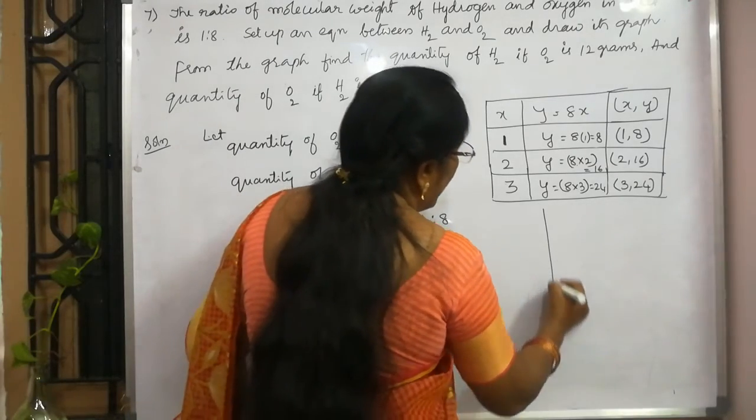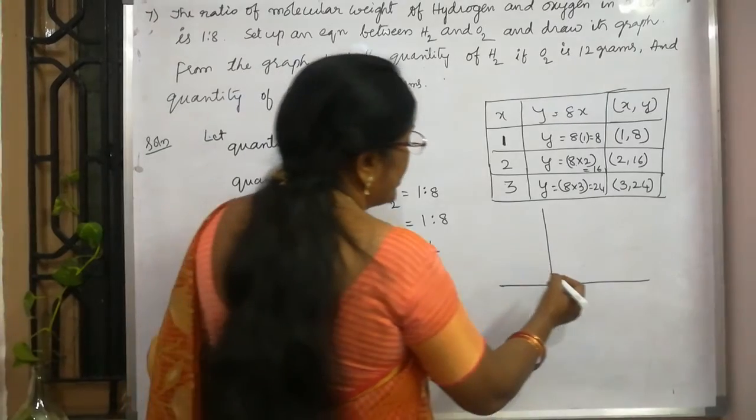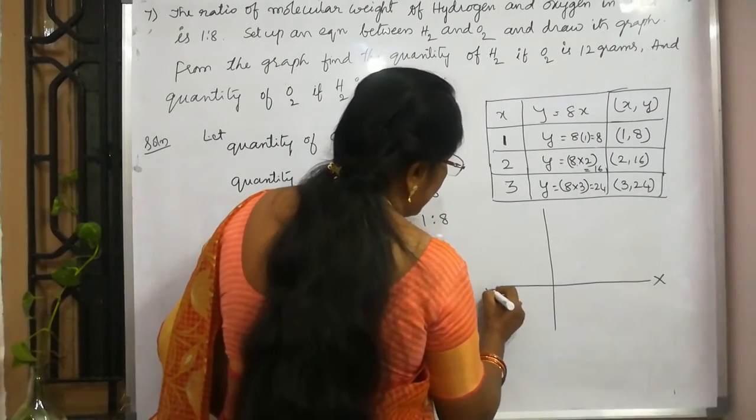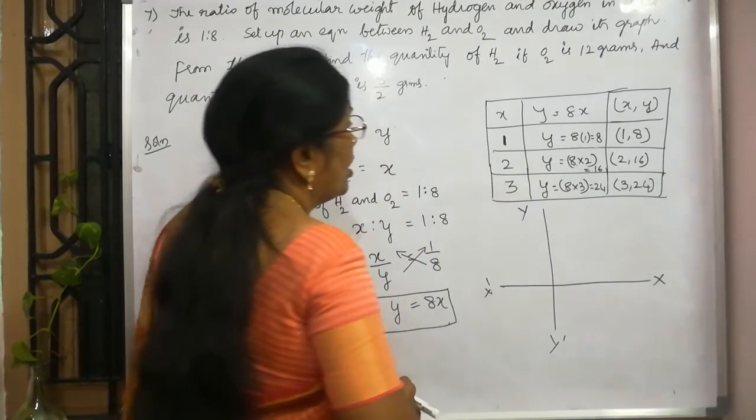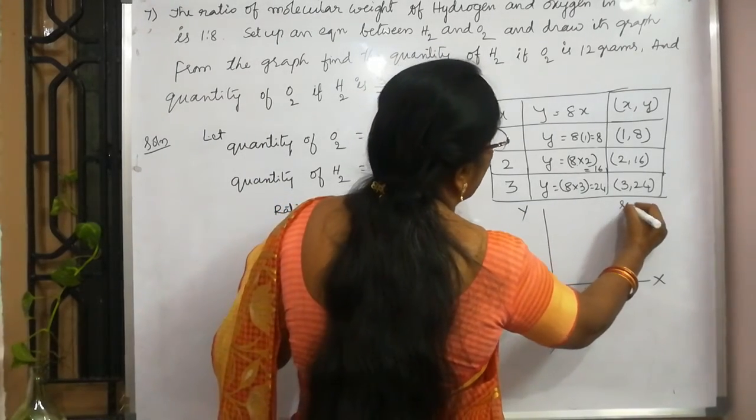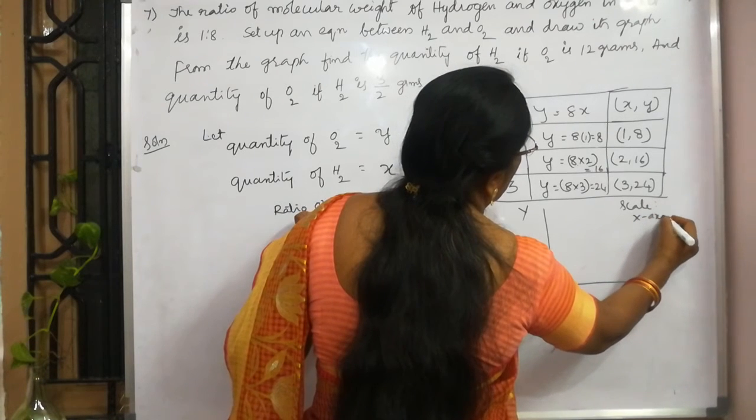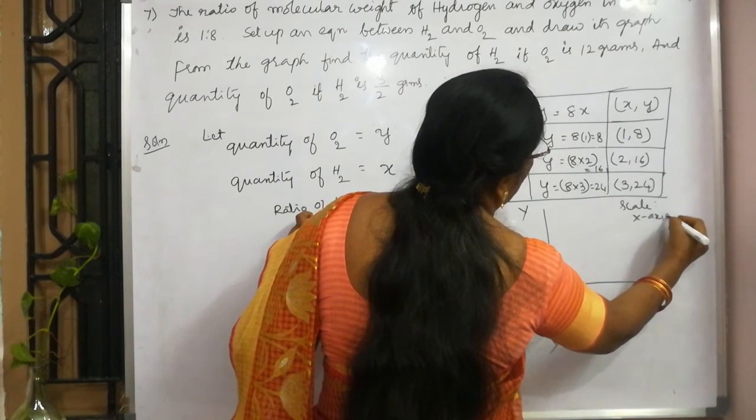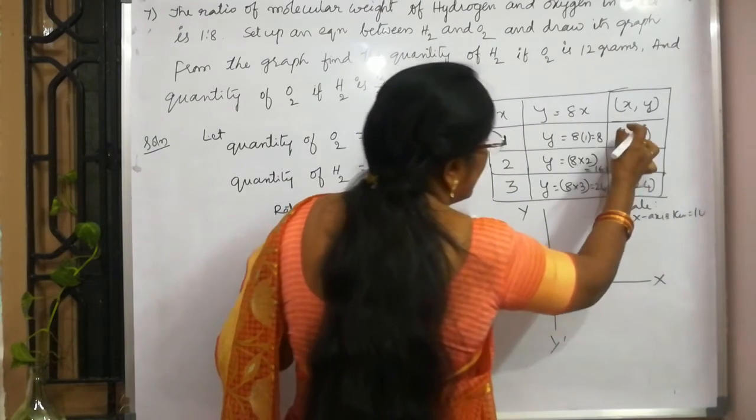Now, you can draw the graph. On x axis, this is x axis. So, you can take the scale as x axis 1 centimeter is equal to 1 unit. Because it is 1, 2, 3.